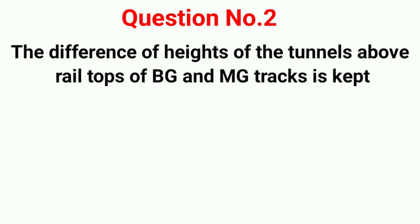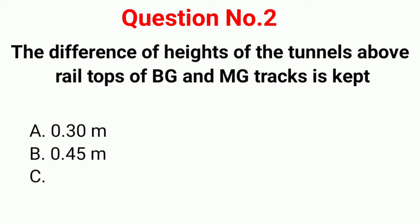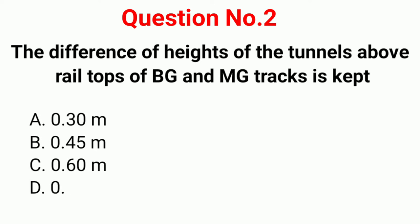Question number 2. The difference of heights of the tunnels above rail tops of broad gauge and meter gauge track is kept: Option A: 0.30 meter. Option B: 0.45 meter. Option C: 0.60 meter. Option D: 0.75 meter.